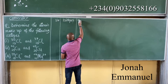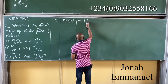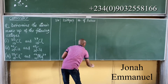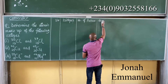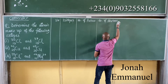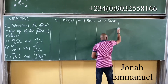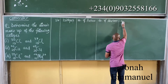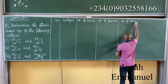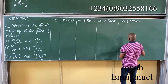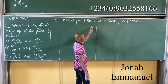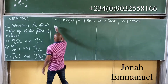We'll have columns for: serial number, isotopes, number of protons, number of neutrons, and number of electrons. An atom is made up of protons, neutrons, and electrons.